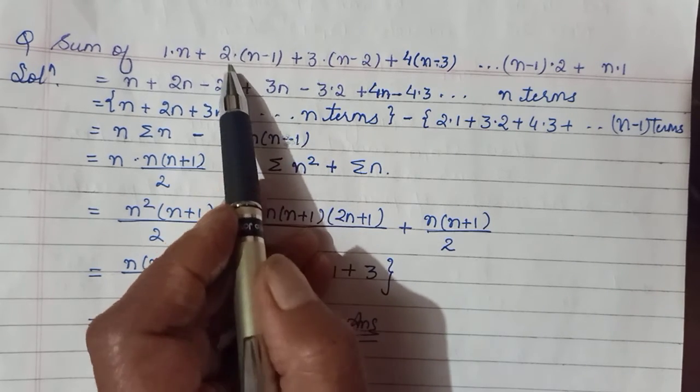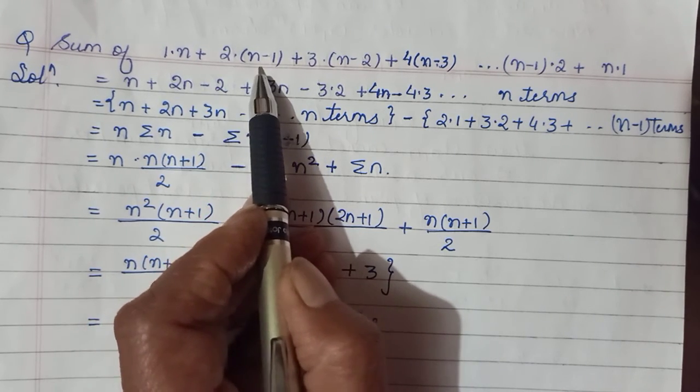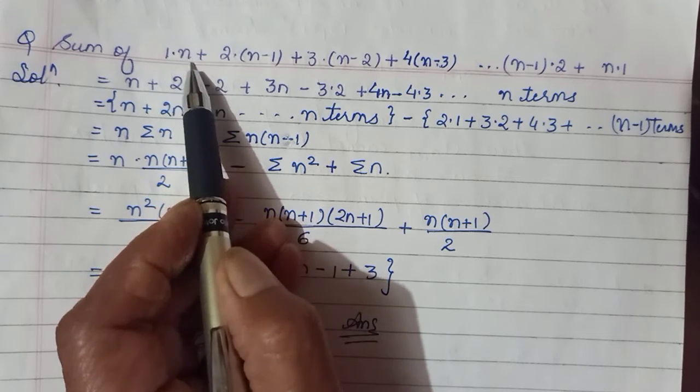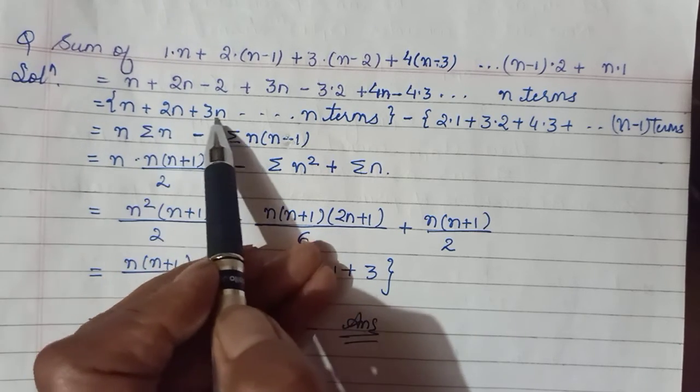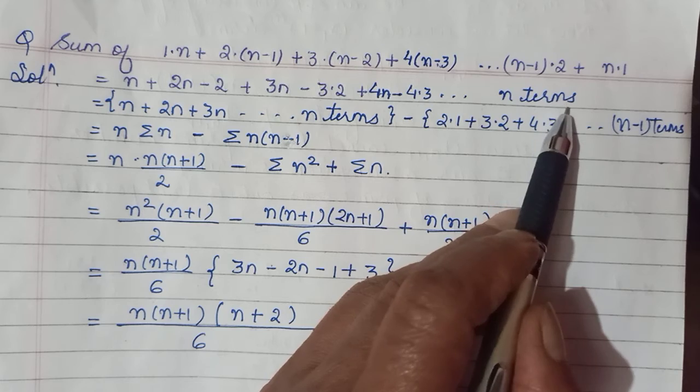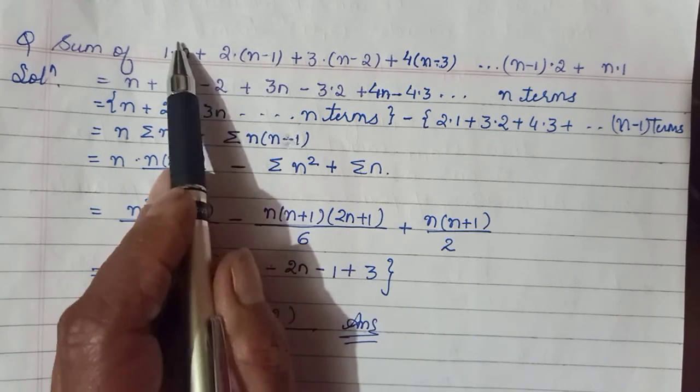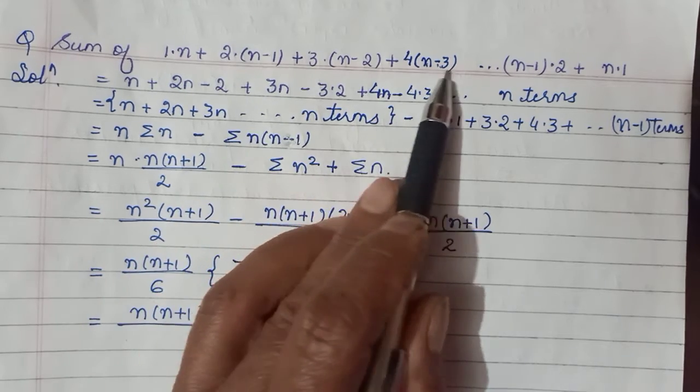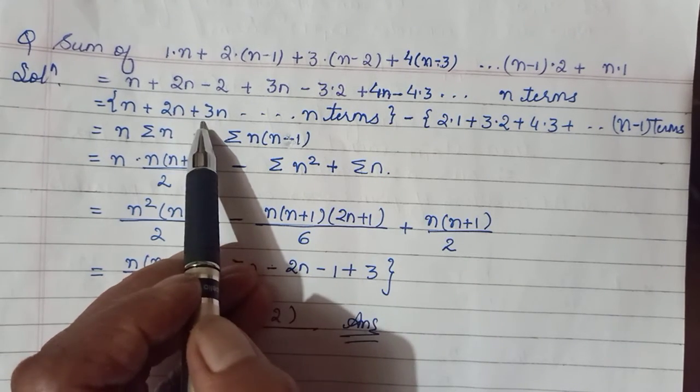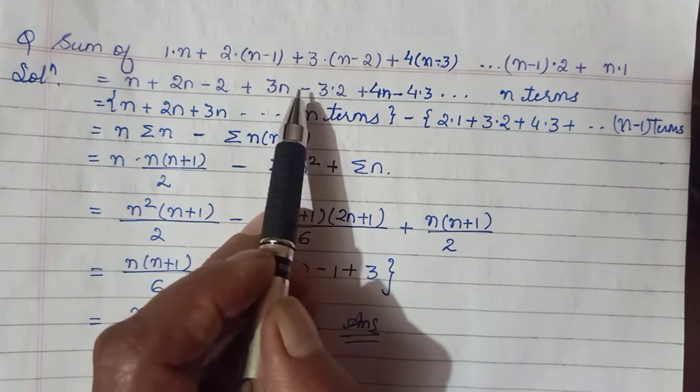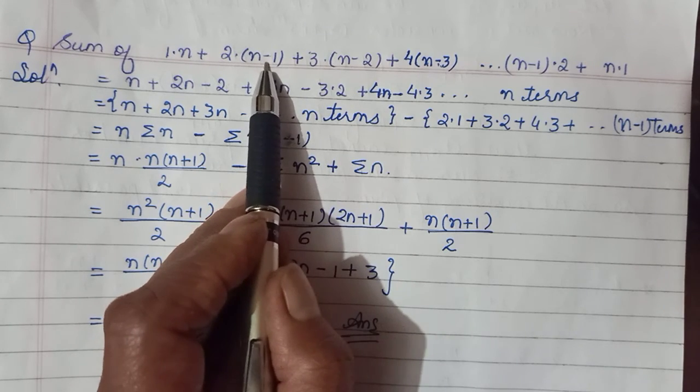Toh negative sign has been taken common and the terms are coming in the form 2·1, 3·2, 4·3, so and so forth. But yeh n-1 terms honge. Dekh raho aap kyunki yeh terms hamein kahaan se mili? When we started multiplying this first wale se, toh hamein khali n milata jo hamein already use kar liya, isme club kar diya. So total agar yeh n terms the, now we have dropped this. So yeh jo hain, yeh wala term chhodke, remaining n-1 terms jinsse hamko yeh form mil rahi hai.